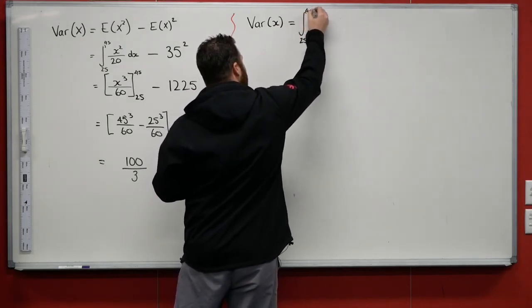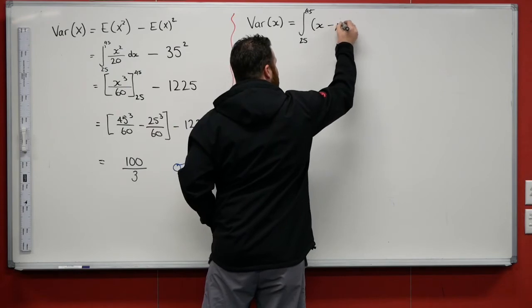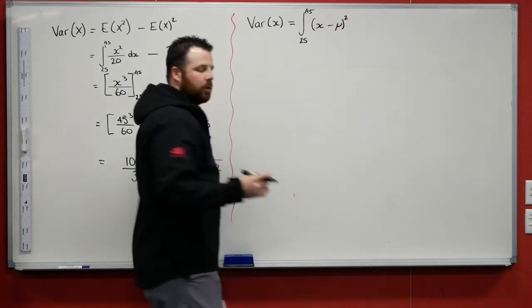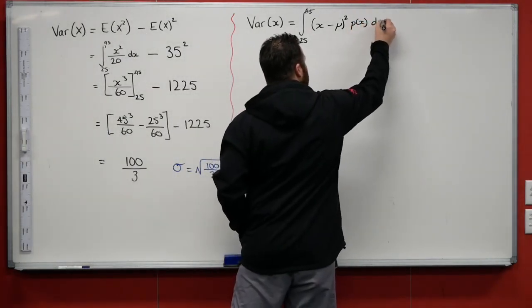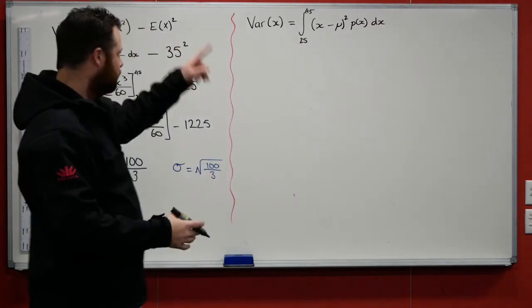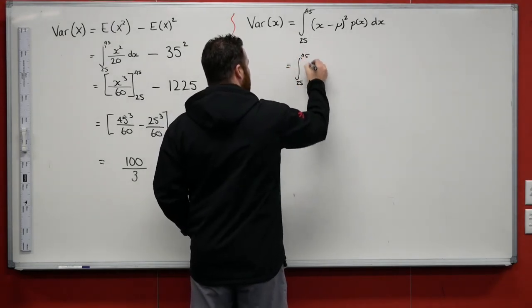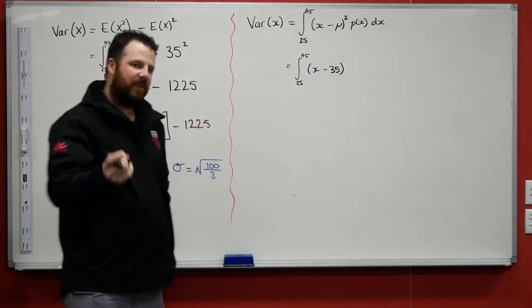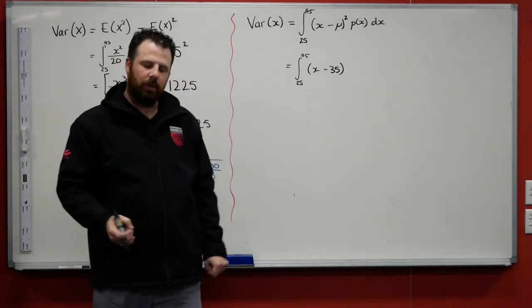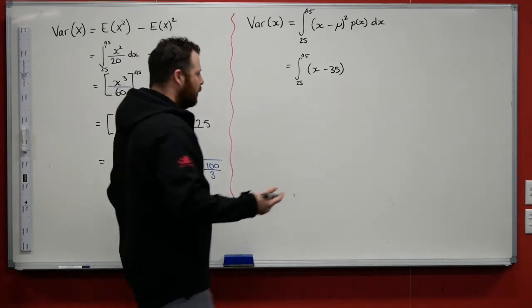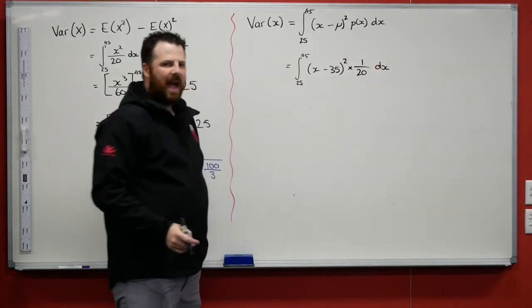So remembering that in that first part, we looked at that variance of x is equal to, this would be between 25 and 45, of the score minus the population mean, multiplied by its probability with respect to x here. So putting some of the values that we know, we know that it's 25, 45, x minus, well, our expected value was 35. If our expected value is 35, that means the population mean is 35. Remember, expected value and mean, they're the same value there. Squared multiplied by 1/20, differentiate all of that with respect to x.